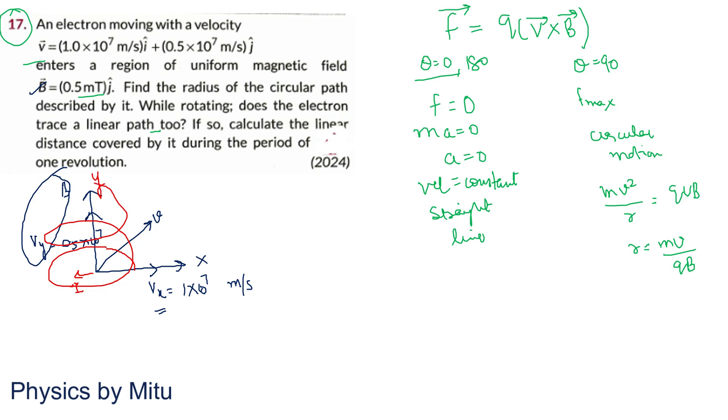So the circular motion will be like this. It will be circular and also helical, with straight line motion too. So the resultant is helical motion. It will move like this.